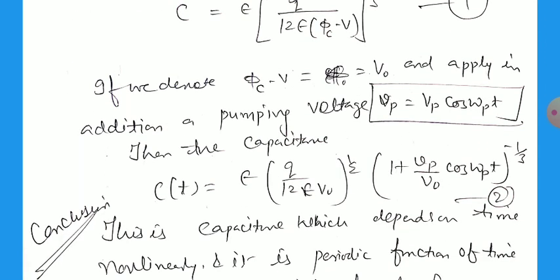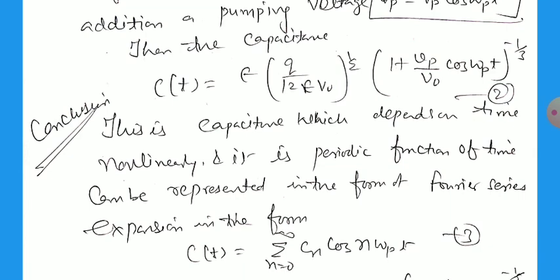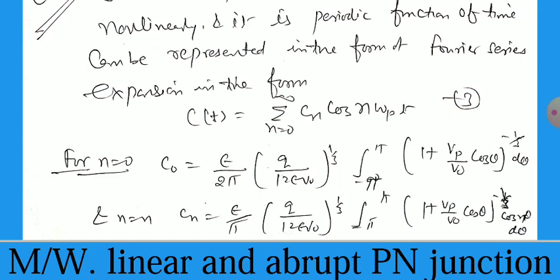If the pumping voltage is Vp equal to capital Vp cos omega t, then we can write at any time the charge on the capacitor is Ct equal to epsilon multiplied by Q over 12 epsilon V0 power 1 by 3 plus 1 plus Vp by V0 cos omega t power minus 1 by 3. This concludes that the capacitor which depends on time nonlinearly is a periodic function of time and can be represented in the form of Fourier series expansion in the form of Ct equal to 0 to infinity sigma Cn cos n omega p t.